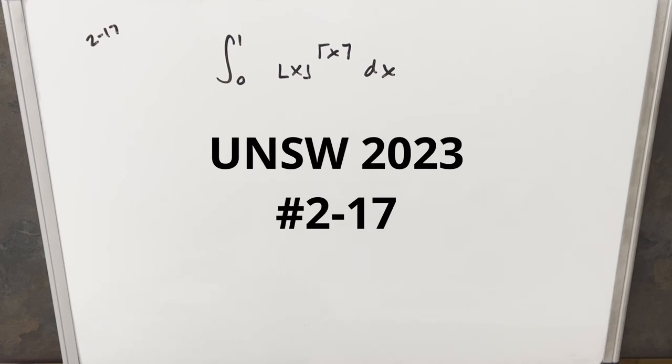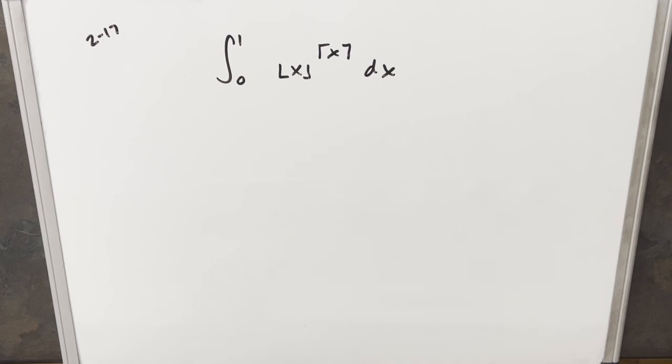We have another integral from the UNSW Integration Bee. This one's from 2023, round 2, problem 17: the integral from 0 to 1 of floor(x) to the power of ceiling(x), dx.